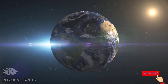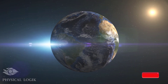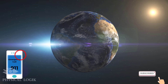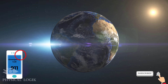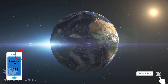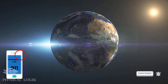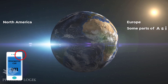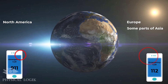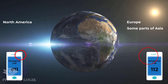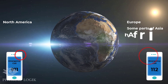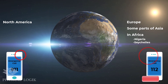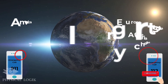Special numbers exist as well. We know that the number 9-1-1 is a special number used to connect callers to emergency services for countries in North America. In Europe and parts of Asia, the special number 1-1-2 is used. In Africa, countries like Nigeria and Seychelles use 1-1-2 as well.